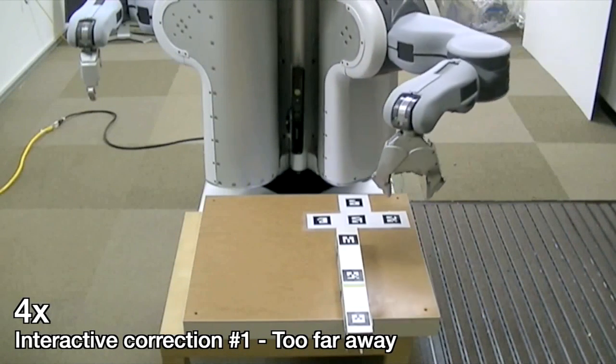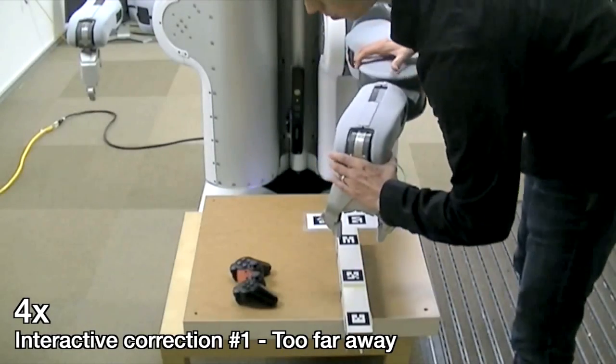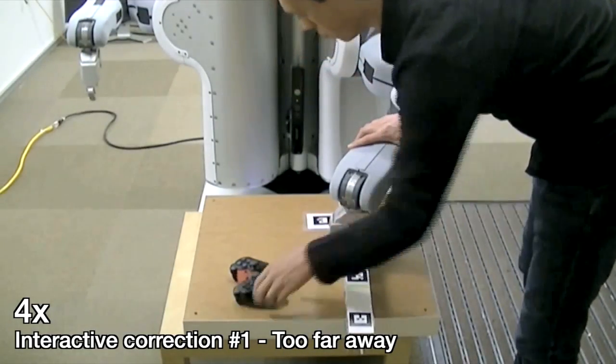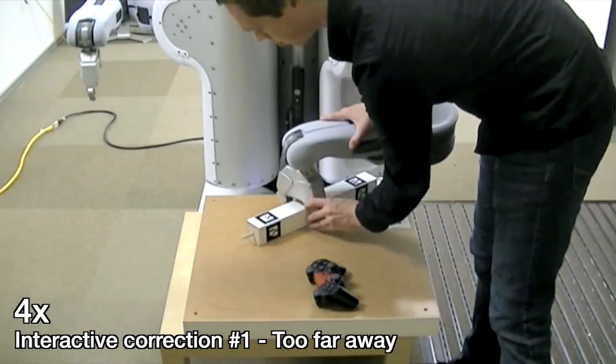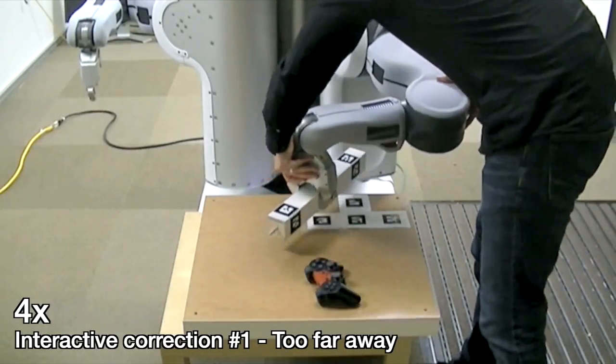Here, the table leg is too far away for the robot to grasp it at the desired position. The user provides an interactive correction, showing the robot how to grasp it at a closer location, bring it toward itself, and then re-grasp it at the desired location.